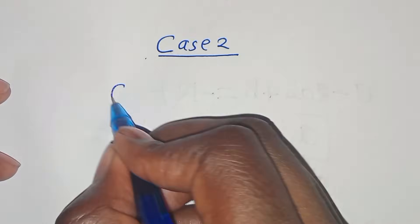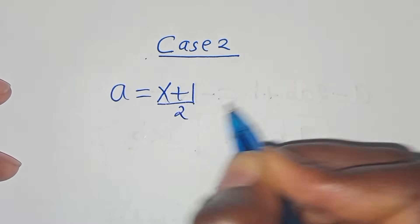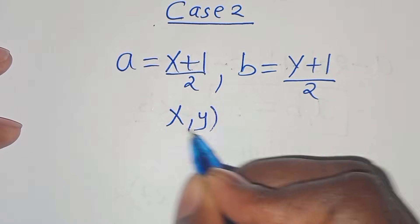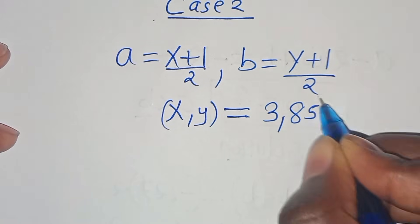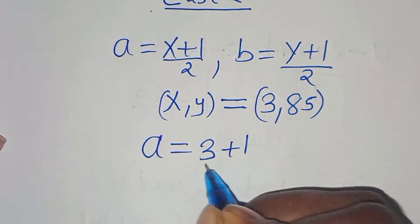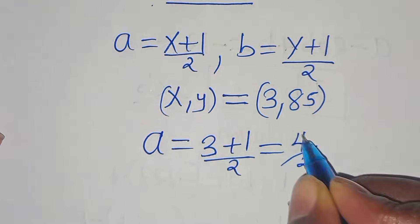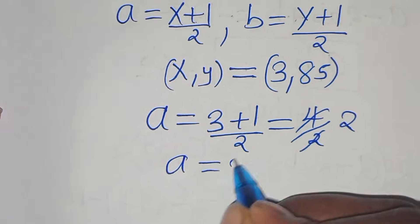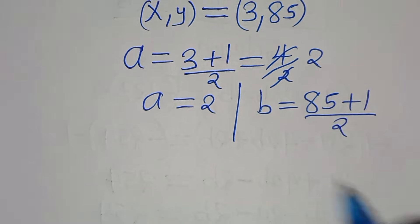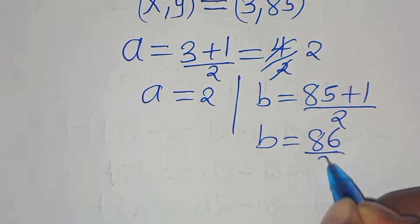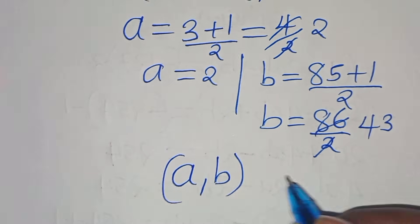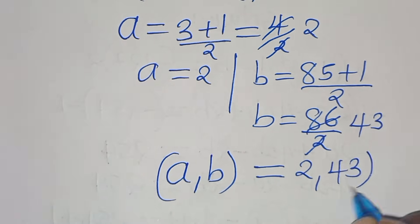For Case 2, x and y are 3 and 85. So a equals (3 plus 1) over 2 equals 4 over 2 equals 2, and b equals (85 plus 1) over 2 equals 86 over 2 equals 43. The second solution is (a, b) equals (2, 43).